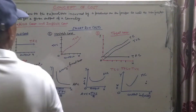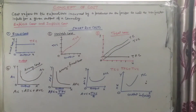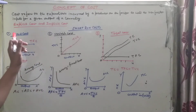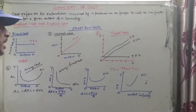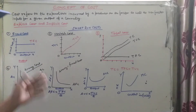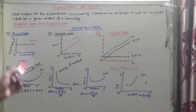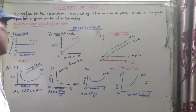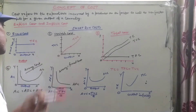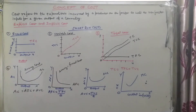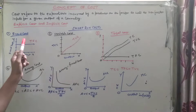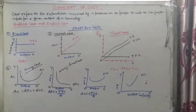Now we are talking about the short run cost. There are seven types of short run costs. The first one is the fixed cost, also called total fixed cost (TFC).